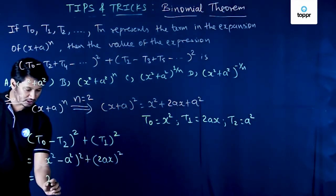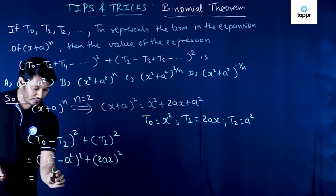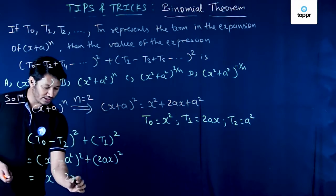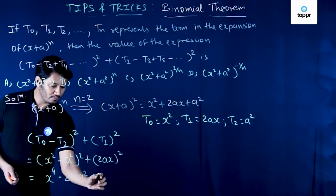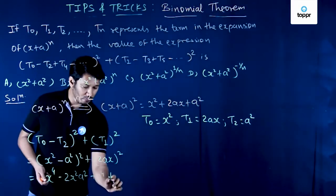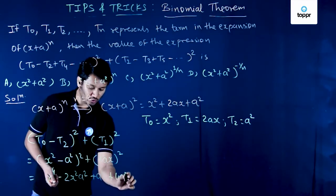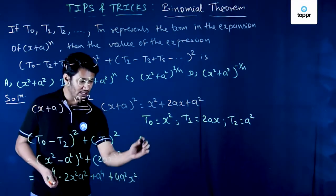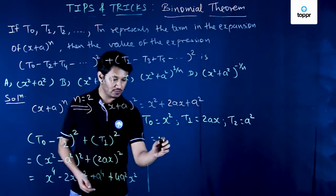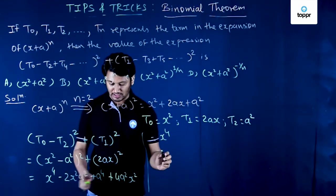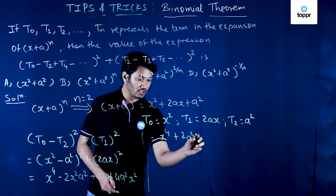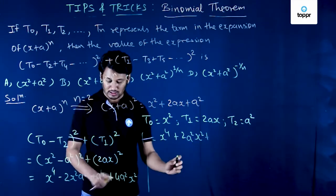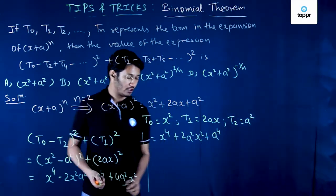If we expand this, this becomes x^4 - 2x^2a^2 + a^4 + 4a^2x^2. You can see that this will further become x^4, this is -2+4 is +2a^2x^2 plus we have a^4 here.